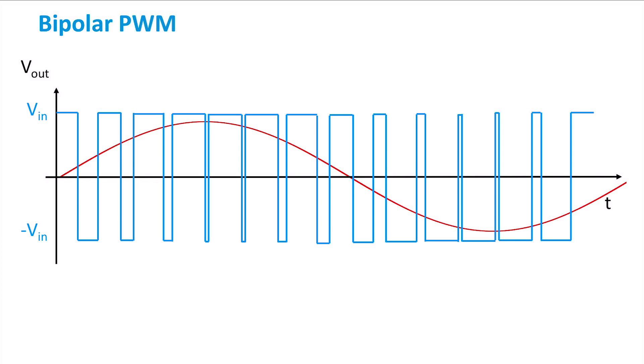Using Fourier's analysis, the fundamental harmonic can be found. Again, all the harmonics of a higher order are disturbances that need to be filtered out before going to the inverter output.